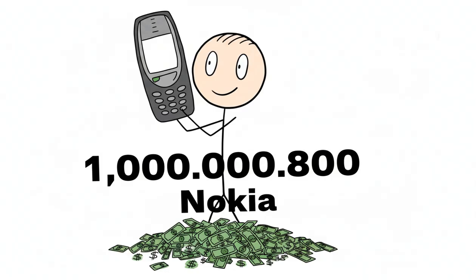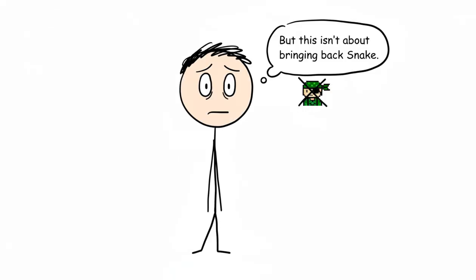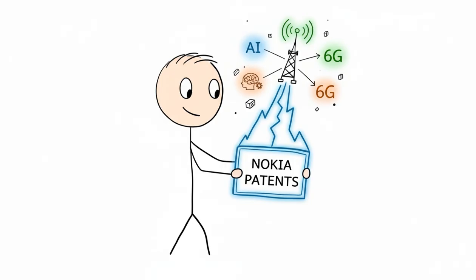First, they dropped a cool $1 billion on Nokia. Yeah, the company that made your first indestructible phone. But this isn't about bringing back Snake. It's about a hostile takeover of the world's telecommunications infrastructure. They're leveraging Nokia's networking patents to build out AI-driven 6G.